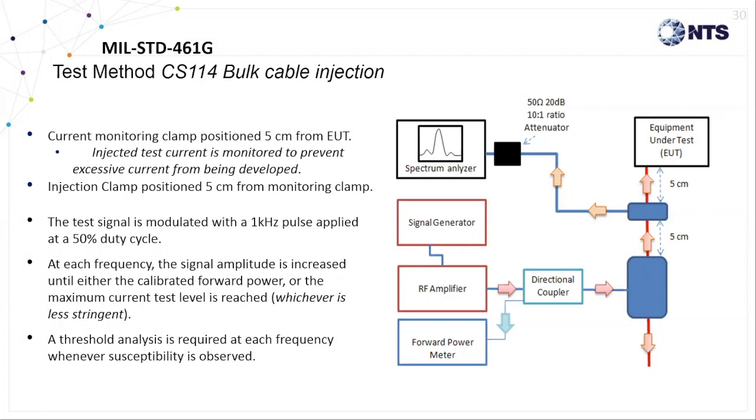It's a common struggle to achieve forward power levels when testing shielded cable with a very low loop impedance. However, the injected current is likely to far exceed the test requirement if not carefully monitored. That's the purpose of having this current monitoring clamp in line. Alternatively, the forward power levels are easily achieved on a high impedance cable well before the current levels are reached.